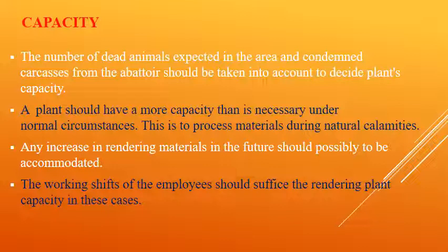Now briefly about the capacity of the plant. The number of dead animals expected in the area and condemned carcasses from the abattoir should be taken into account to decide the plant's capacity. A plant should have more capacity than is necessary under normal circumstances, to process materials during natural calamities when large numbers of animals may die. Any future increase in rendering materials should also be accommodated. Extra materials can be processed by increasing the number of working shifts.